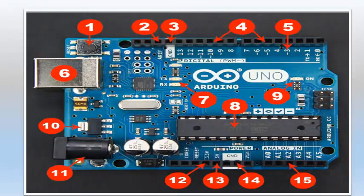The first one is a reset button. It is used to restart any code that has been loaded on the Arduino board. Labeled as 2 are the analog reference pins that are used to set an external reference voltage. Number 3 is a ground pin. There are a few ground pins in the Arduino board and they all work the same. From pin 0 to pin 13 are digital pins that can be used as input or output depending upon the functionality you require.